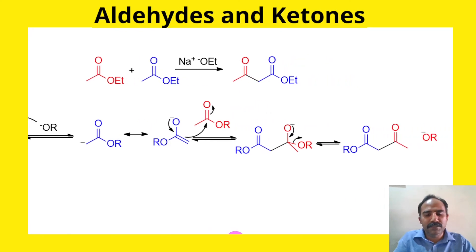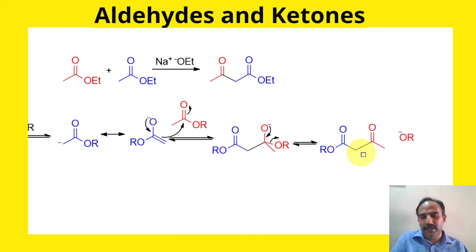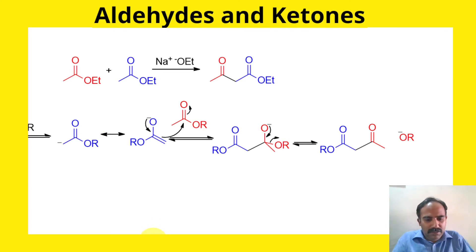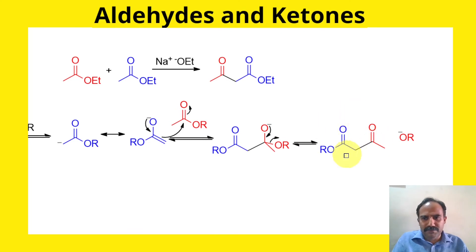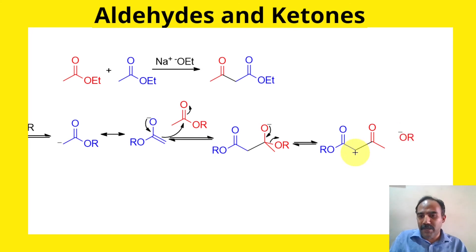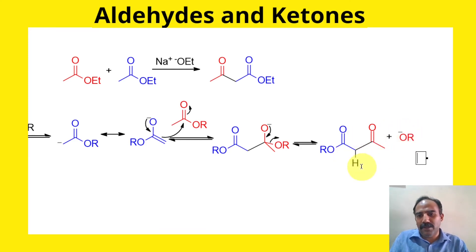When you look at the reaction, all these steps are reversible, so the product would not form in good yield if everything remained reversible. Look at the product: it has an active methylene group — a CH2 flanked by two carbonyl or electron-withdrawing groups (one keto and one ester) — which is very acidic. The pKa of the starting ester is around 25, and the pKa of the alcohol (ROH) is around 16, so the forward reaction is not highly favored. However, the pKa of the beta-keto ester product is around 10–11.